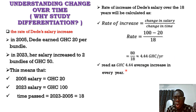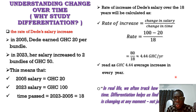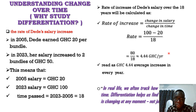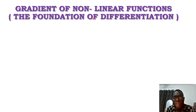We read this as 4.44 Ghana cedis average increase every year. In real life we often have to find the rate of change of one quantity over another, and differentiation helps us find the rate of change at any moment — not just between two fixed points. That is the introduction and starting point of differentiation: finding the rate of change of a quantity over time. We now also need to understand how to find the gradient of a non-linear function, which will help us understand the foundation of differentiation.